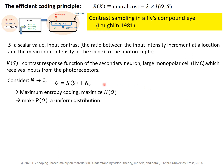Now, since O is equal to Ks plus the output noise, for intuitive understanding, we can ignore the output noise N(O) for now. So therefore, for P(O) to be a uniform distribution, we require that Ks also follow a uniform distribution.